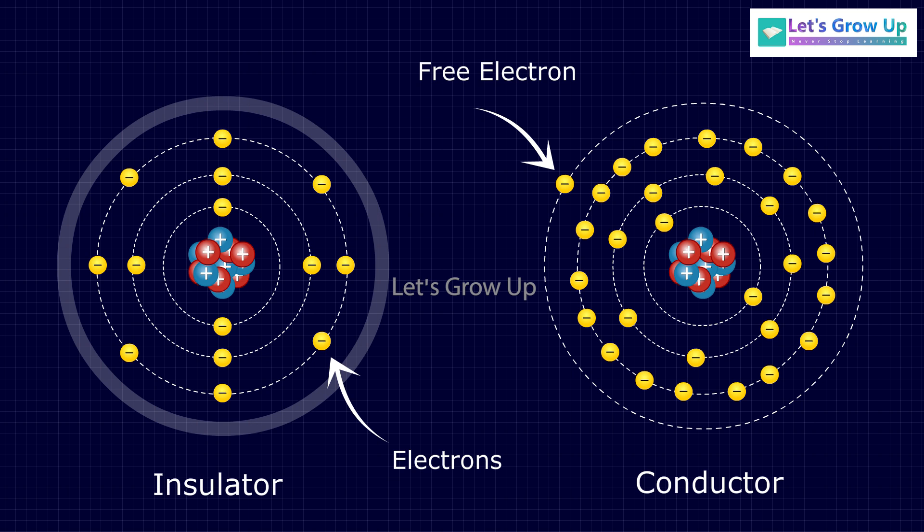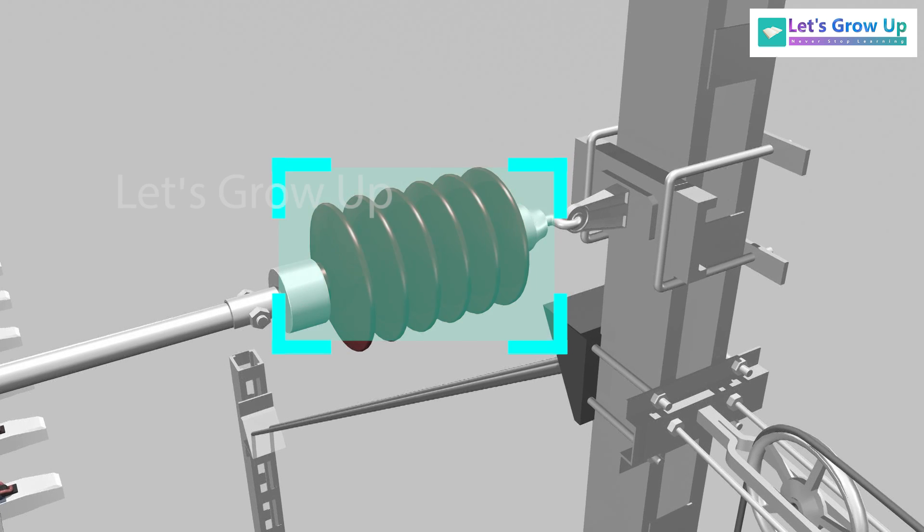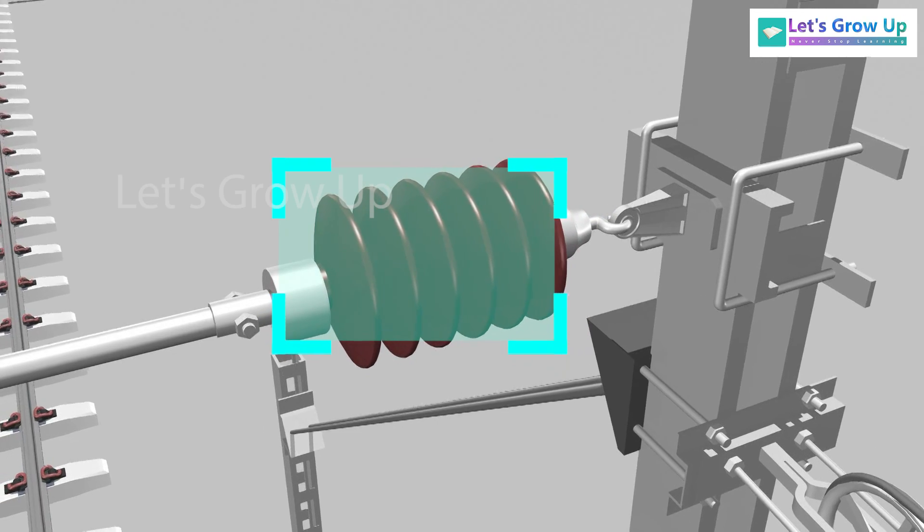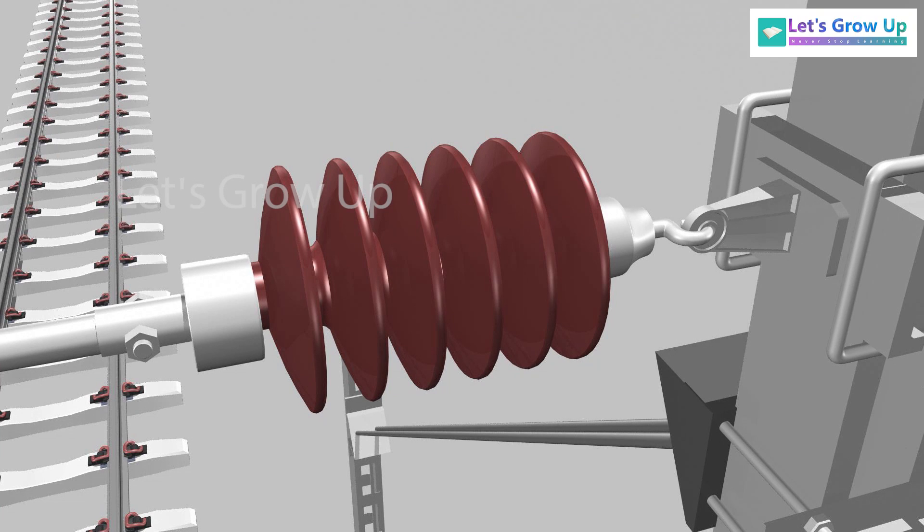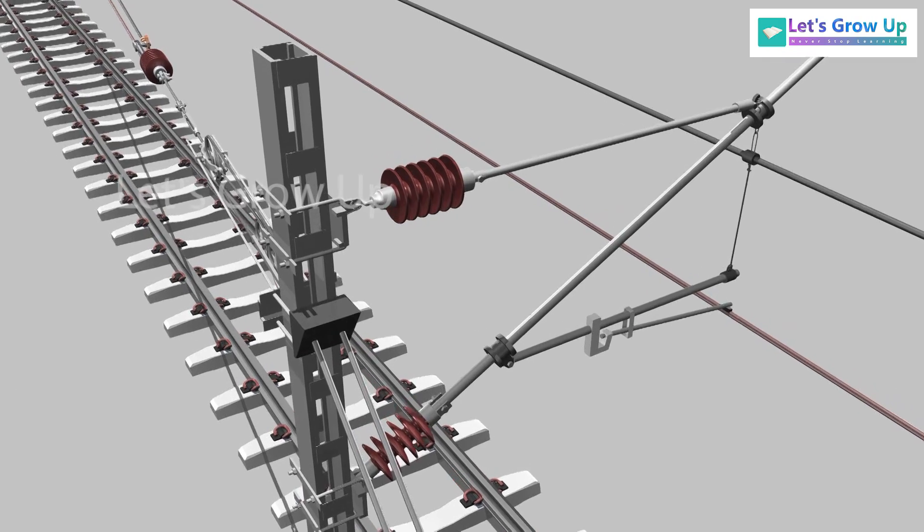Insulators resist or block the electric current from passing through them. Insulators are commonly used to protect us from the dangerous effects of electricity. Hope you understand the difference between conductor and insulator.